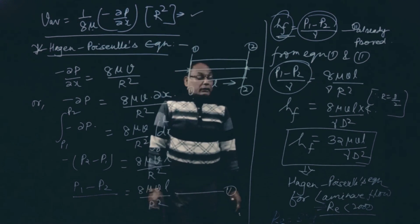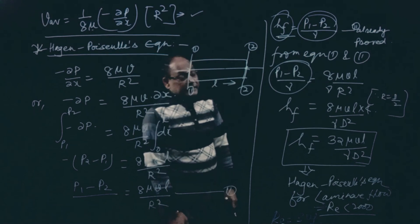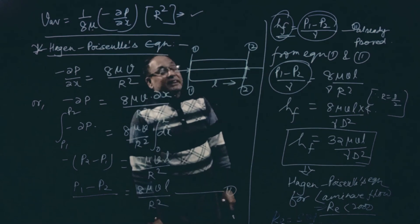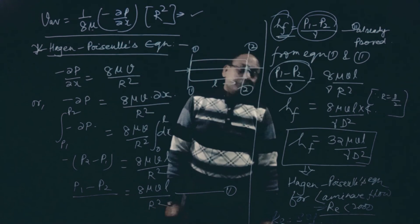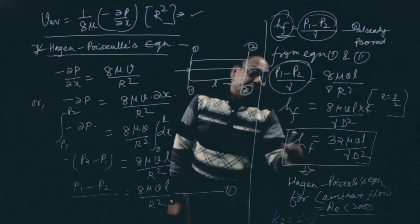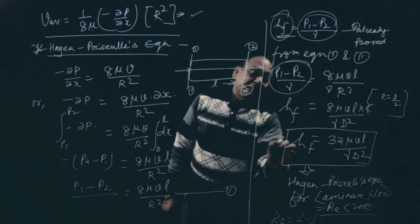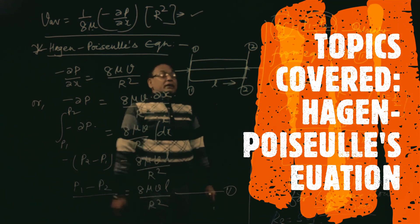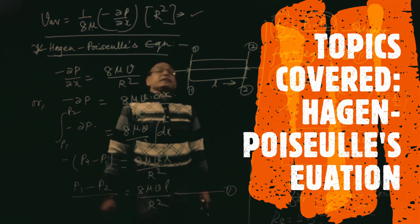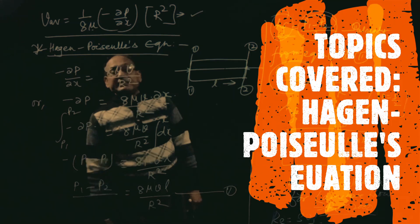After confirming the Reynolds number is less than 2000, flow is laminar and we can apply this equation to find out the head loss. Rest of the things I will discuss in the next class. Thank you.